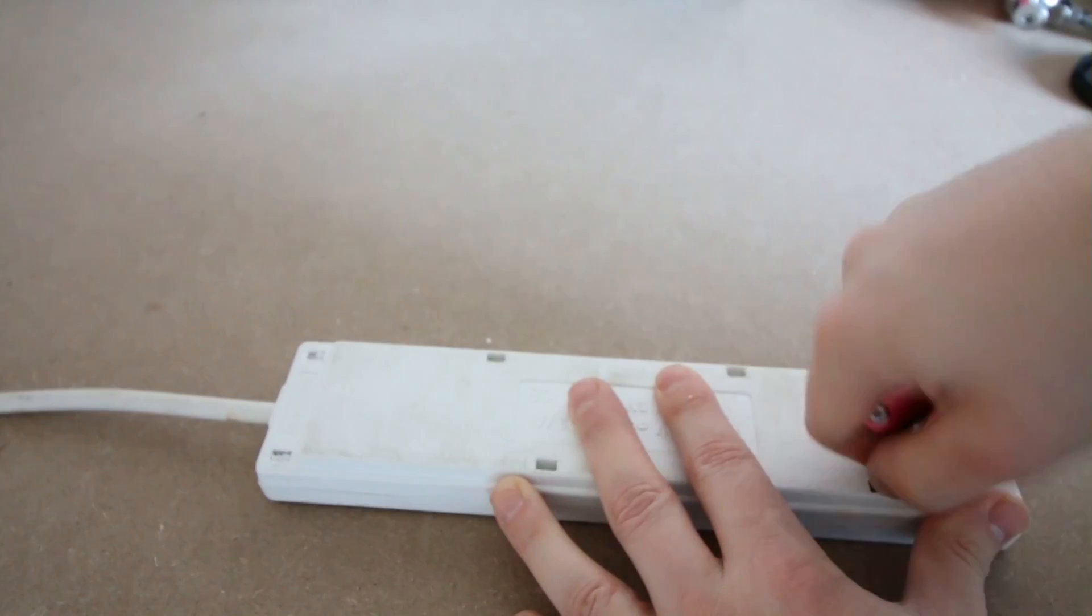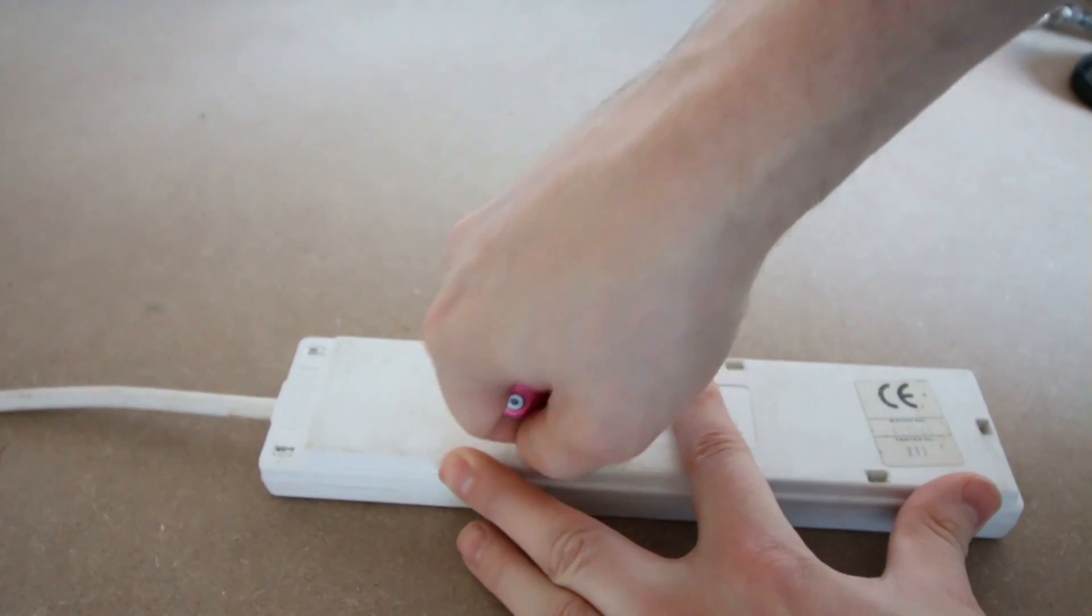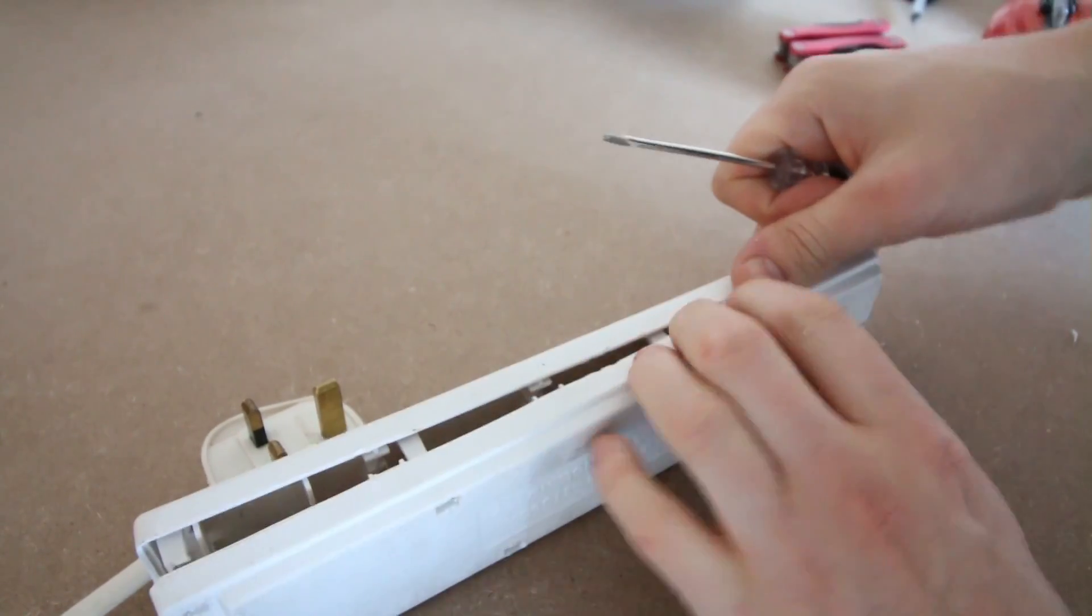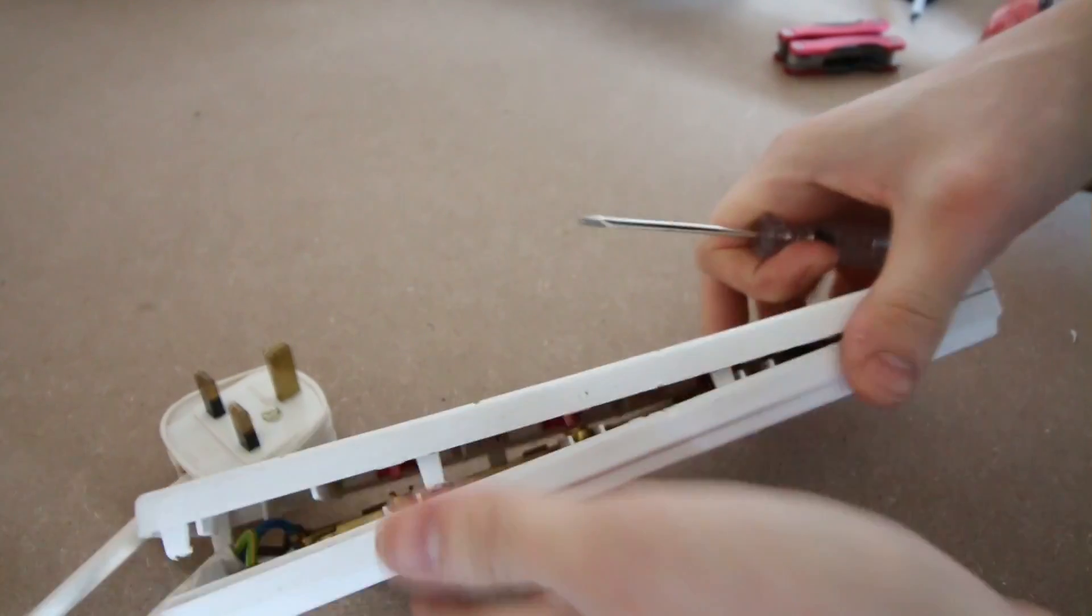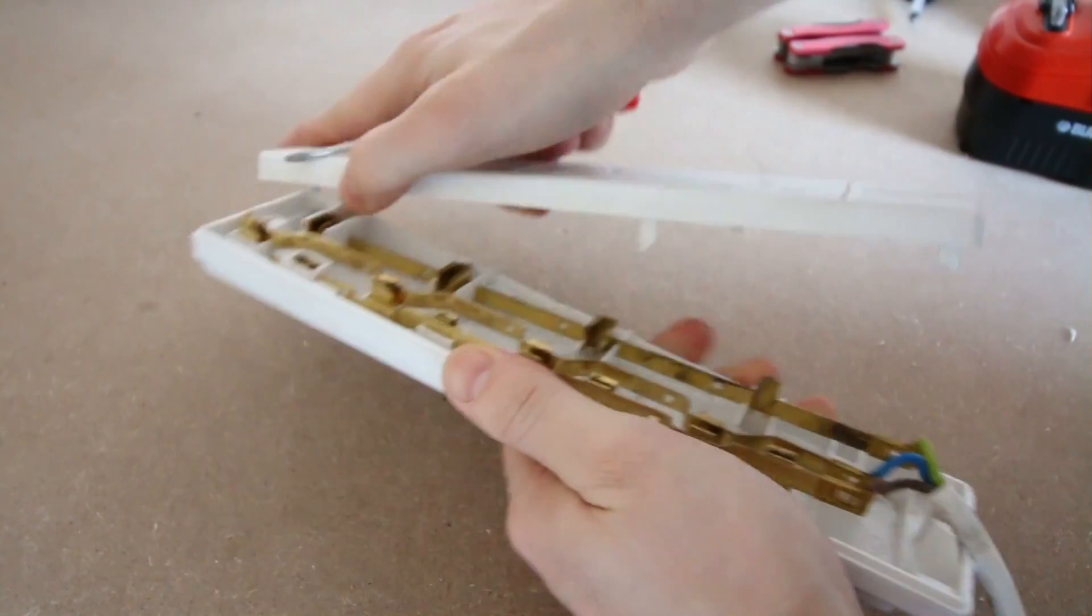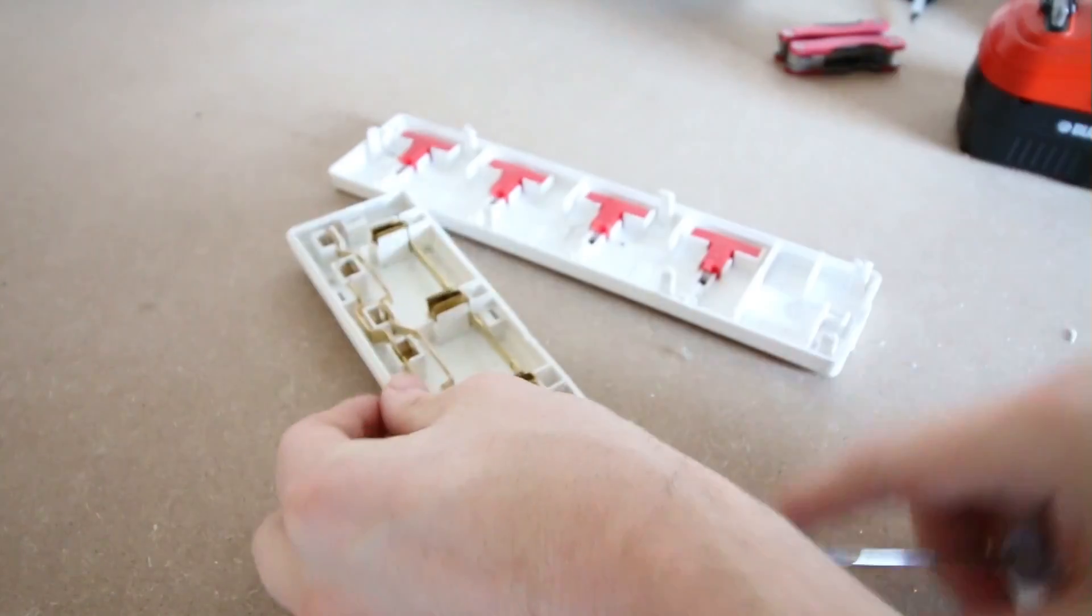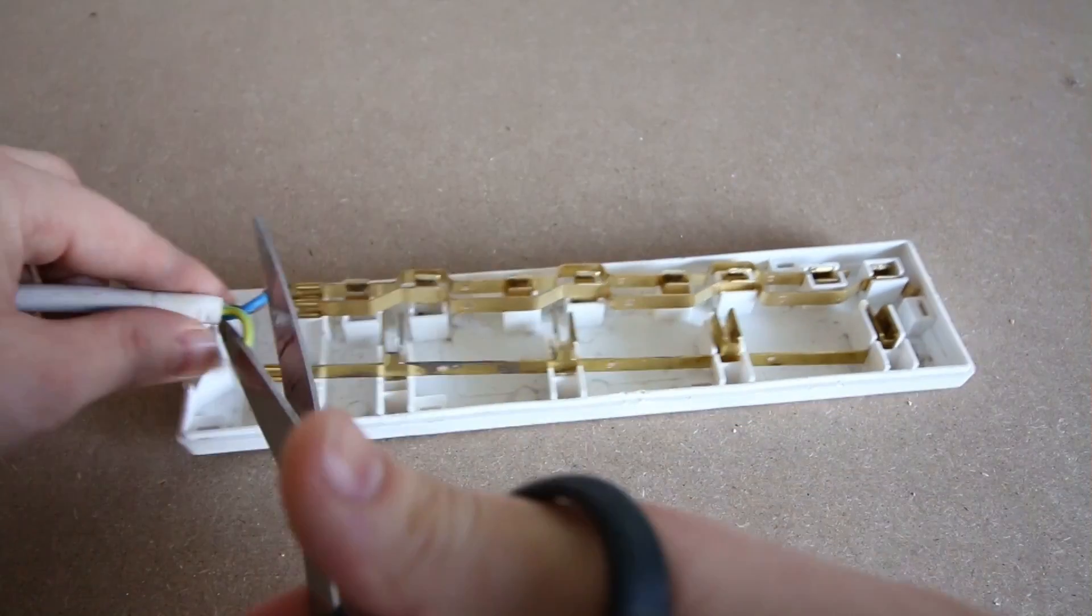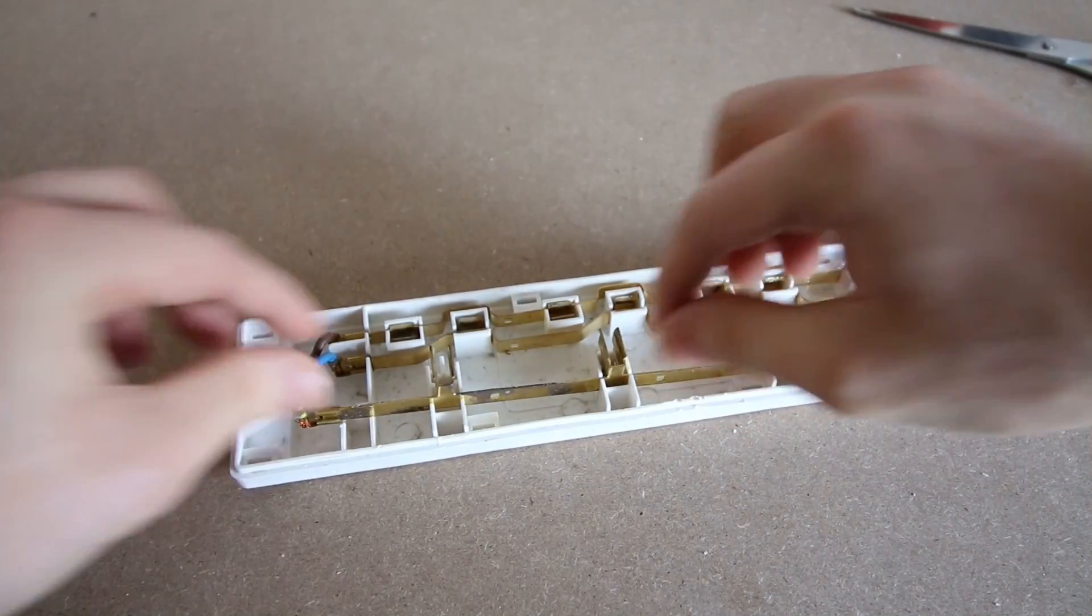The next thing I did was loosen up these clips underneath to allow access inside. There we go. Once inside I chopped off the wires and then removed all the metal parts.